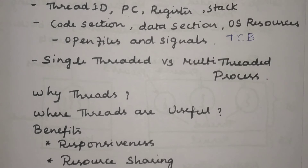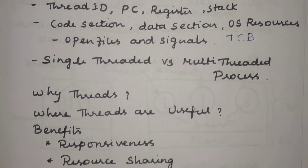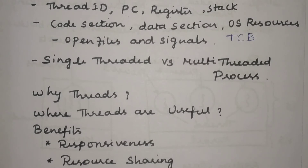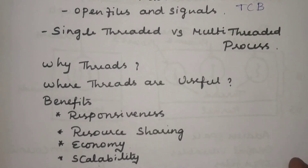The next reason is computation speedup. When we divide tasks and assign them to individual threads, within a very short period of time we get the result the user wants, increasing computation speed and reducing response time. One more benefit is that threads are more useful on systems with multiple CPUs — that is, a multi-processing or multi-core environment. Using threads gives real parallelism in such environments. These are some of the reasons why we go with the threads concept.